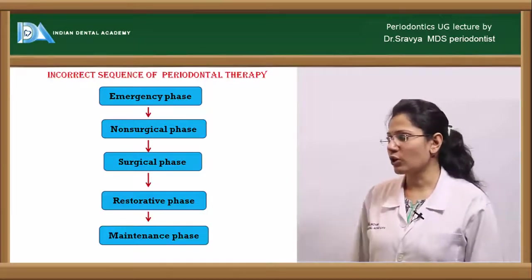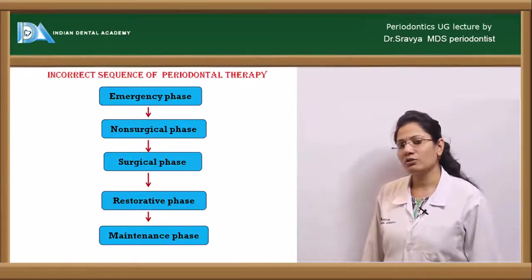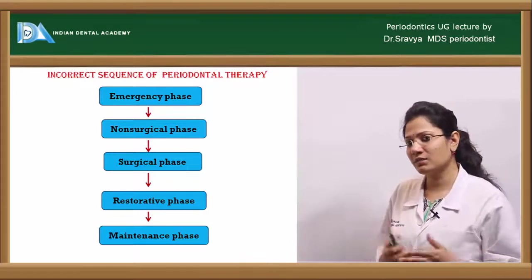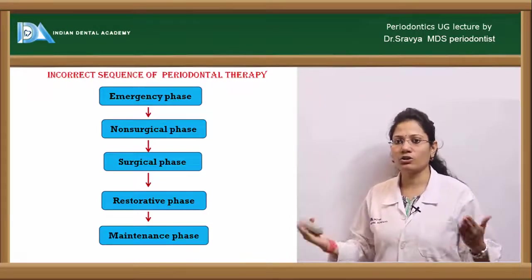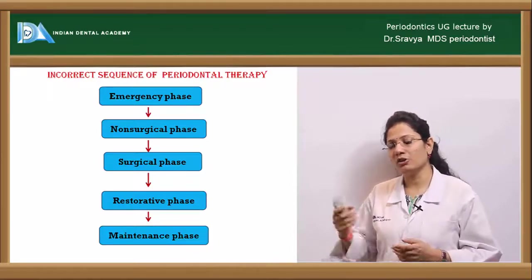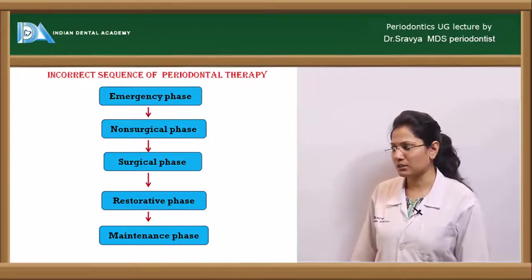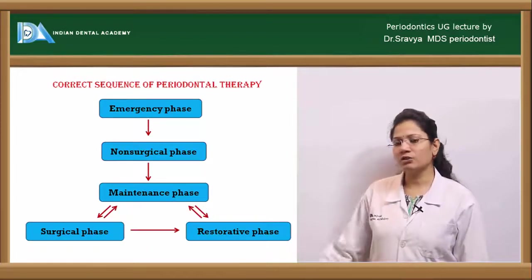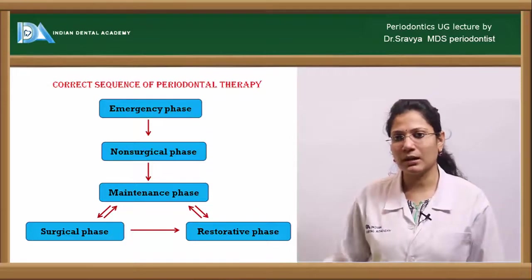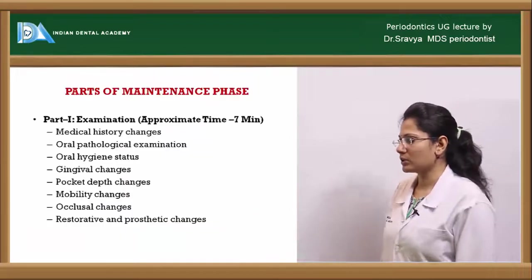This slide shows an incorrect sequence of periodontal therapy, wherein — without any periodic supportive maintenance phase — you proceed directly through all other phases and only go to the maintenance phase after completing the entire treatment. This is a very incorrect sequence. The next slide shows the correct sequence of periodontal therapy, which you must follow.